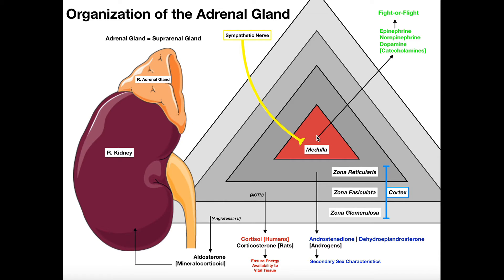The adrenal medulla is not activated through hormones — it is activated through the sympathetic nerve. The medulla is the central part. Moving to the cortex, it's divided into three layers. The adrenal cortex is glandular, endocrine tissue.